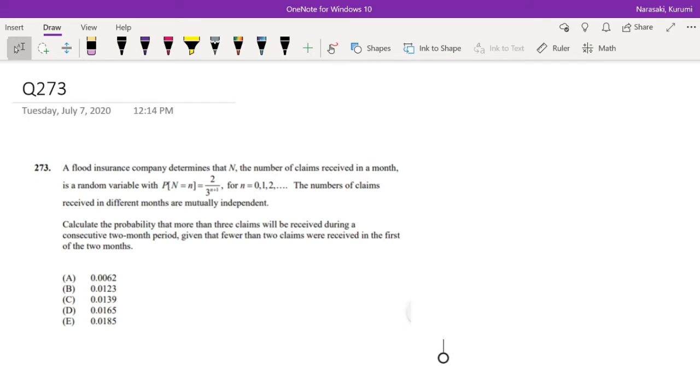As soon as you already attempted it, let's just dive right in. A flood insurance company determines that n is the number of claims received in a month. It's a random variable with this function for n equals 0, 1, 2, and so on. That's basically just saying it should be an integer. The number of claims received in different months are mutually independent.